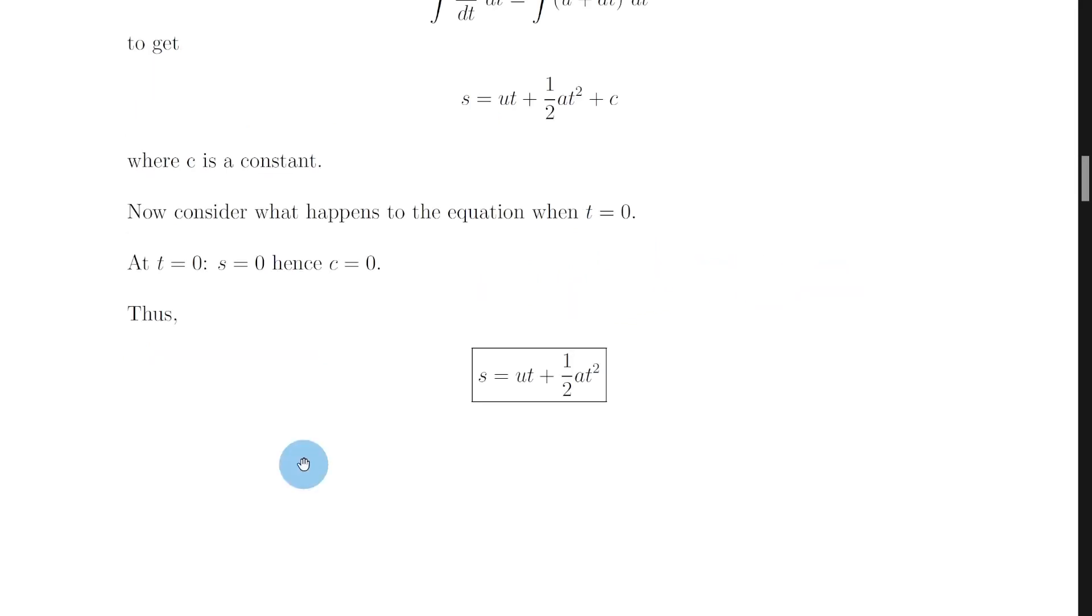And now similar to what we did to derive the first equation of motion we're going to consider what happens to the equation here when time t is equal to 0, i.e. at the starting point and this is also known as the initial conditions.